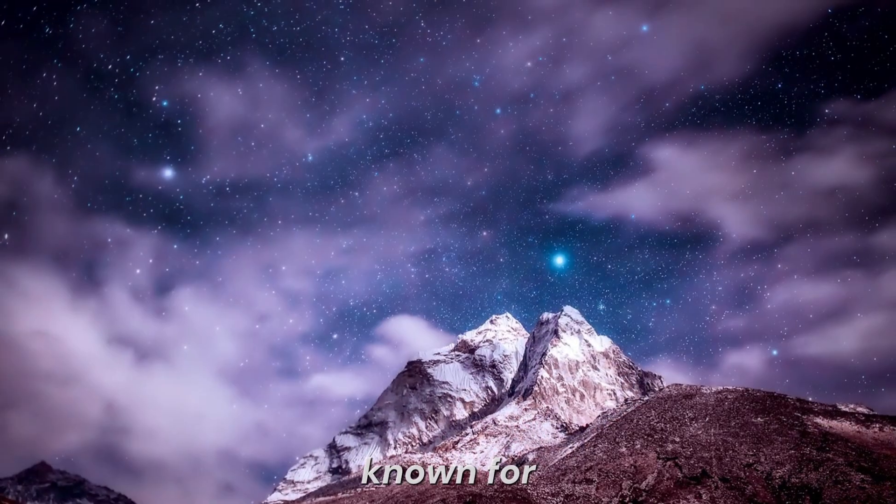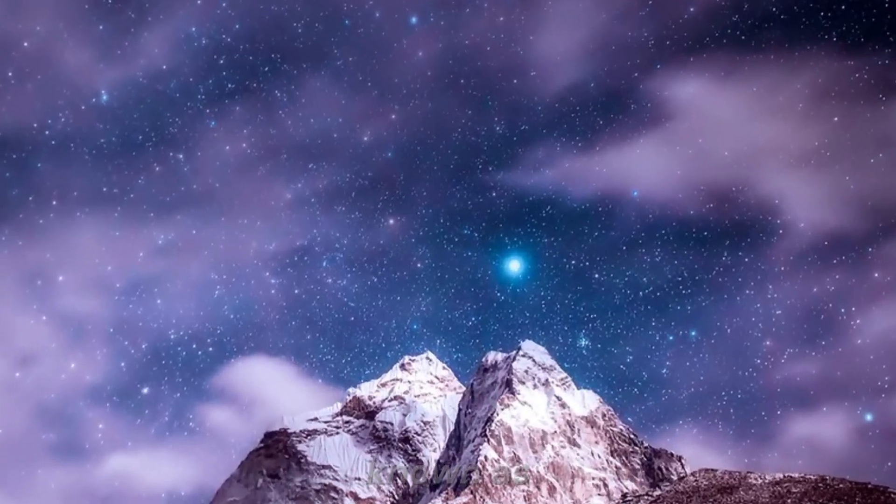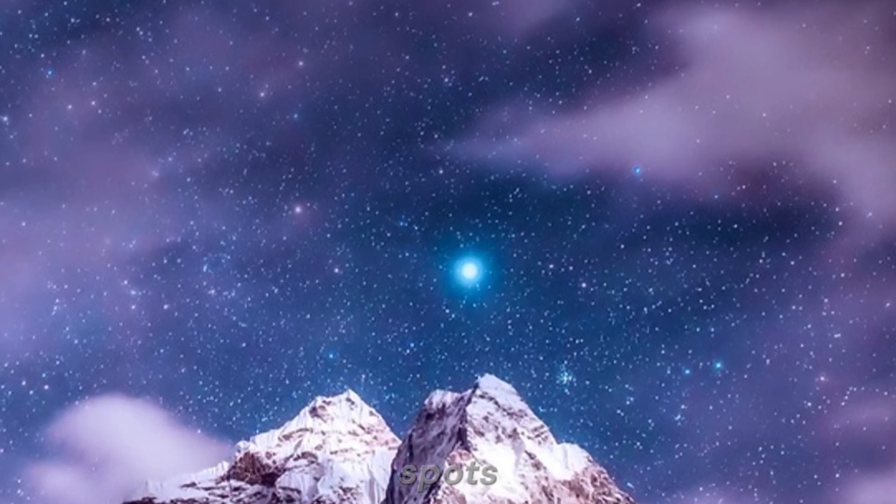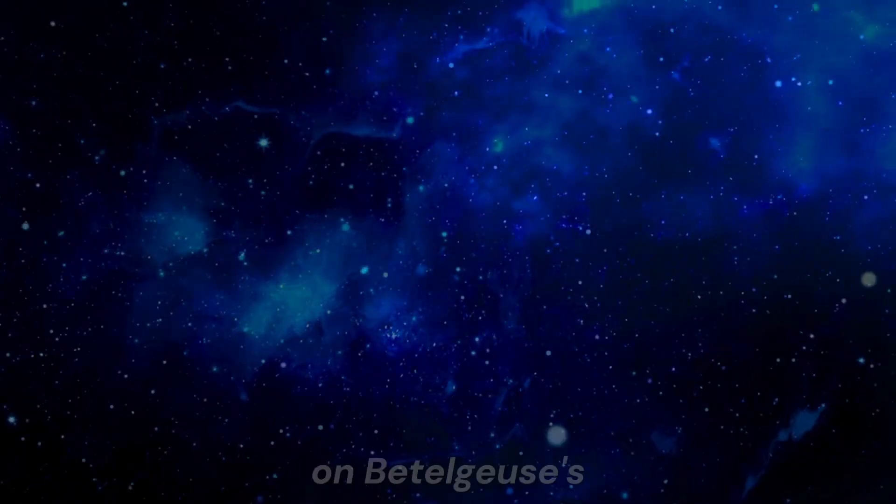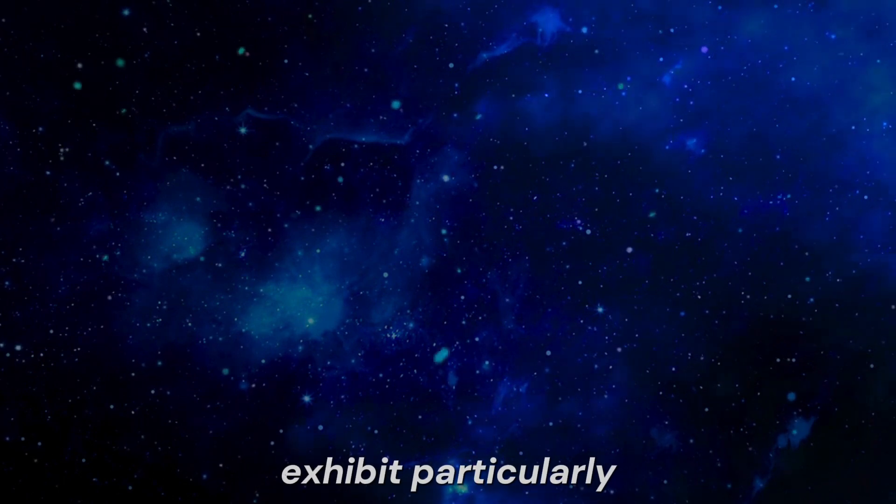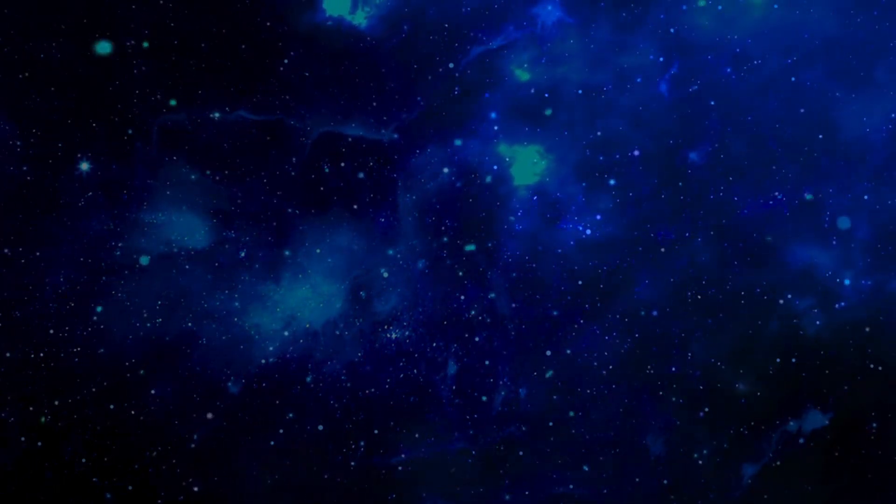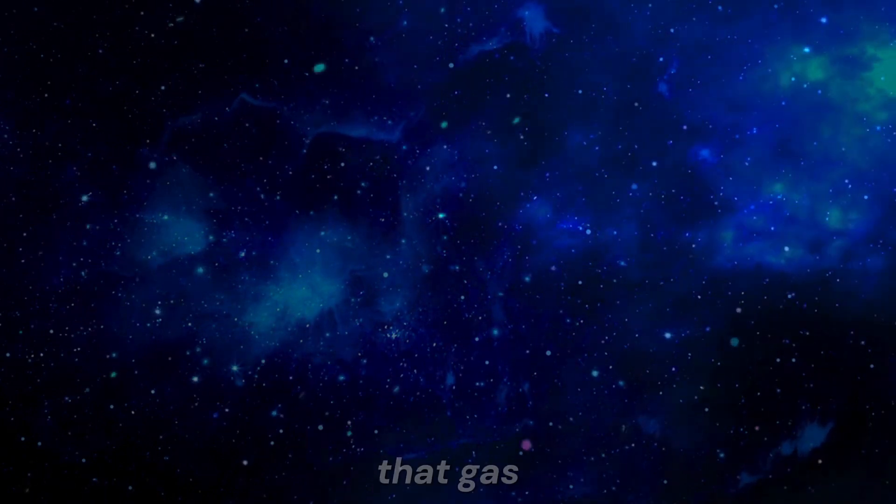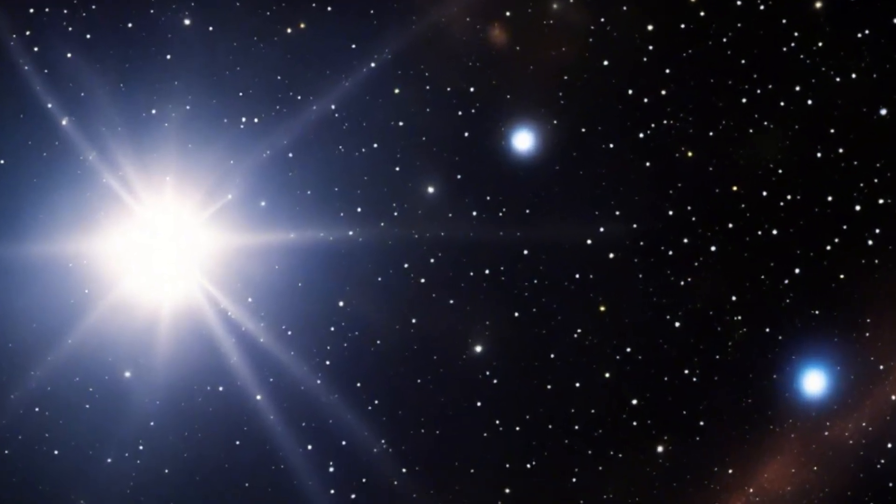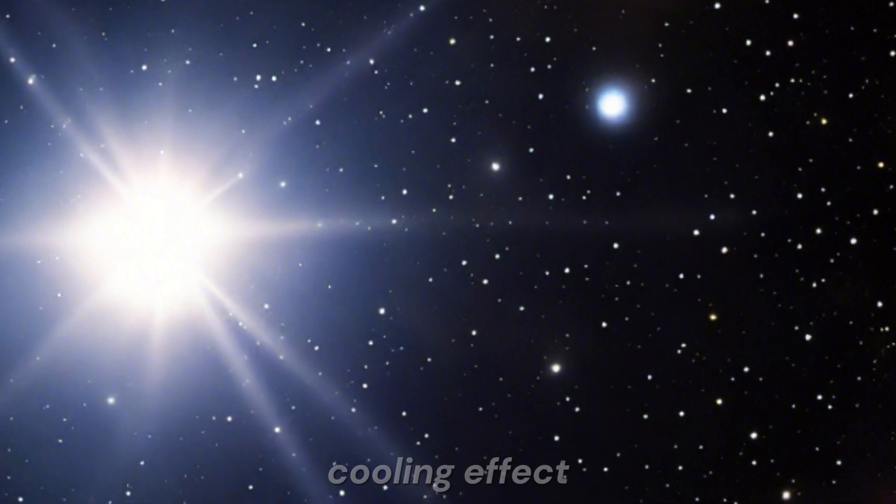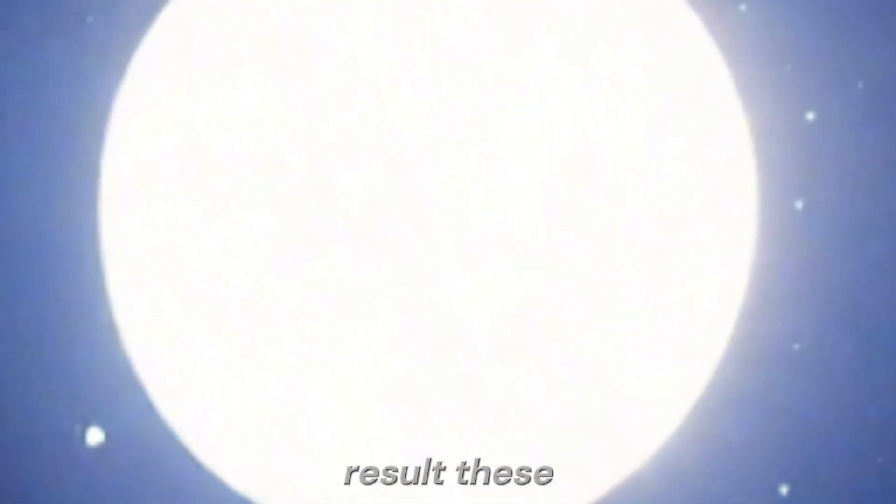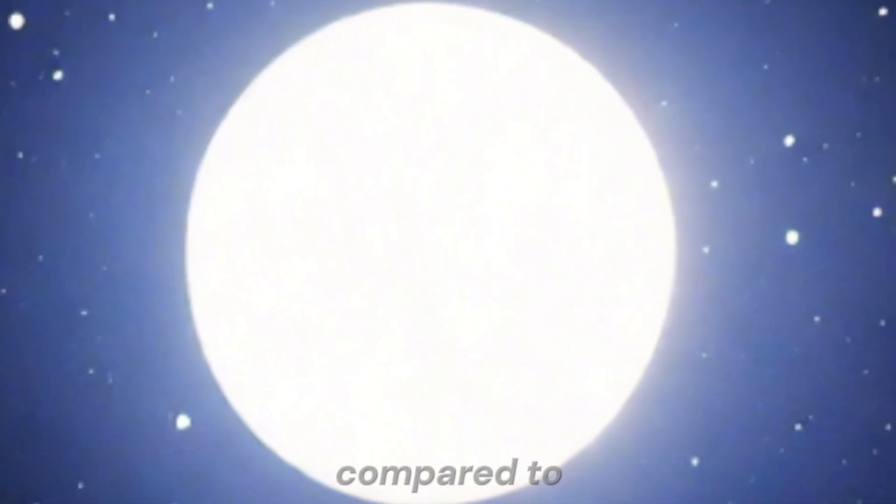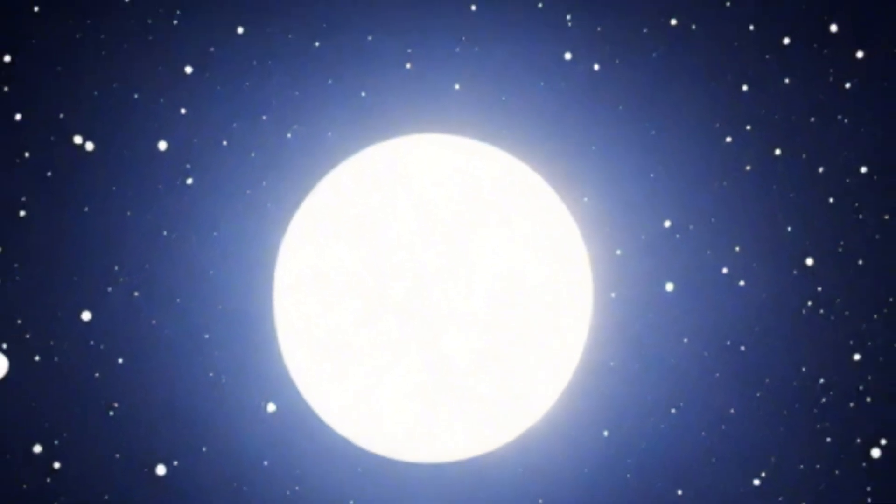Betelgeuse is also known for its dark spots on the surface, known as star spots or magnetic spots. These areas on Betelgeuse's surface exhibit particularly strong magnetic intensity and therefore are cooler. It's because of the star's magnetic field that gas from its interior struggles to reach the surface, creating a cooling effect. As a result, these spots appear darker compared to the rest of the surface.